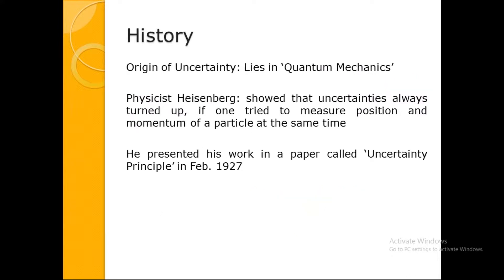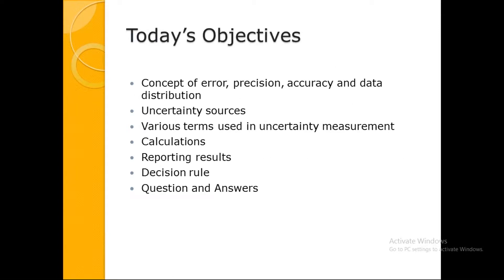Let us briefly see the history. The origin of uncertainty actually lies in quantum mechanics. Physicist Heisenberg was working on uncertainties of particle positions and momentum. He showed that uncertainties would always be present if you try to measure the position and momentum of a particle at the same time. He published this work in a paper called the Uncertainty Principle in 1927.